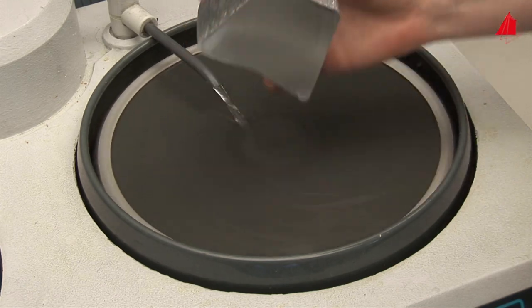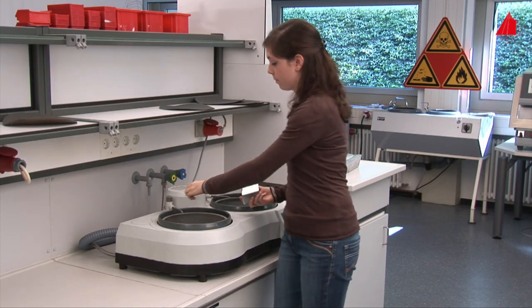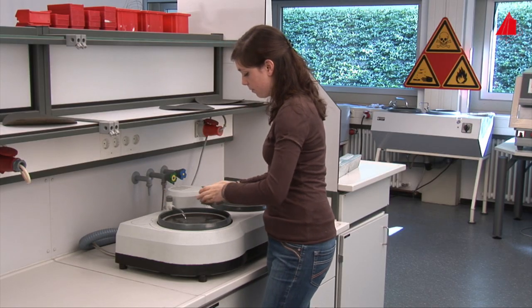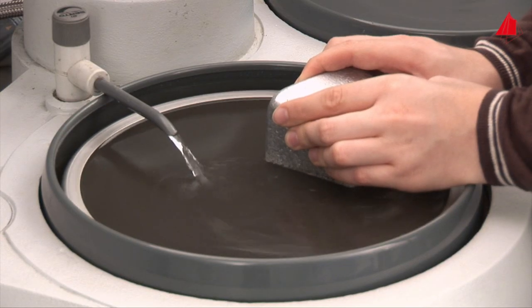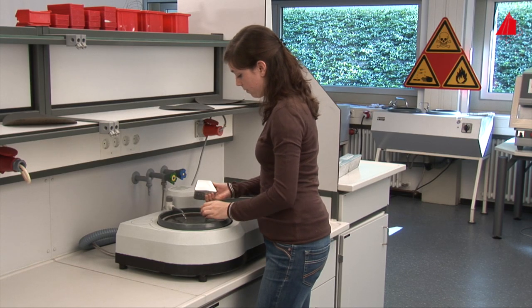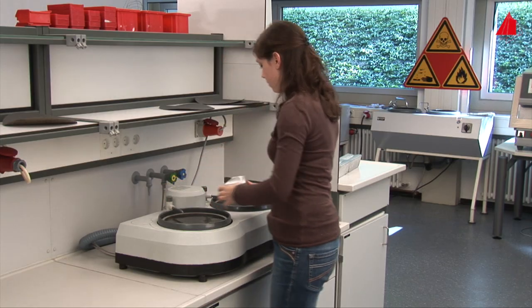the material tester rotates the sample by 90 degrees and grinds it once more. This time with medium grained silicon carbide paper. Here again, she uses sufficient flushing with water. This keeps the sample cool and prevents the abrasive paper from being loaded with material particles.